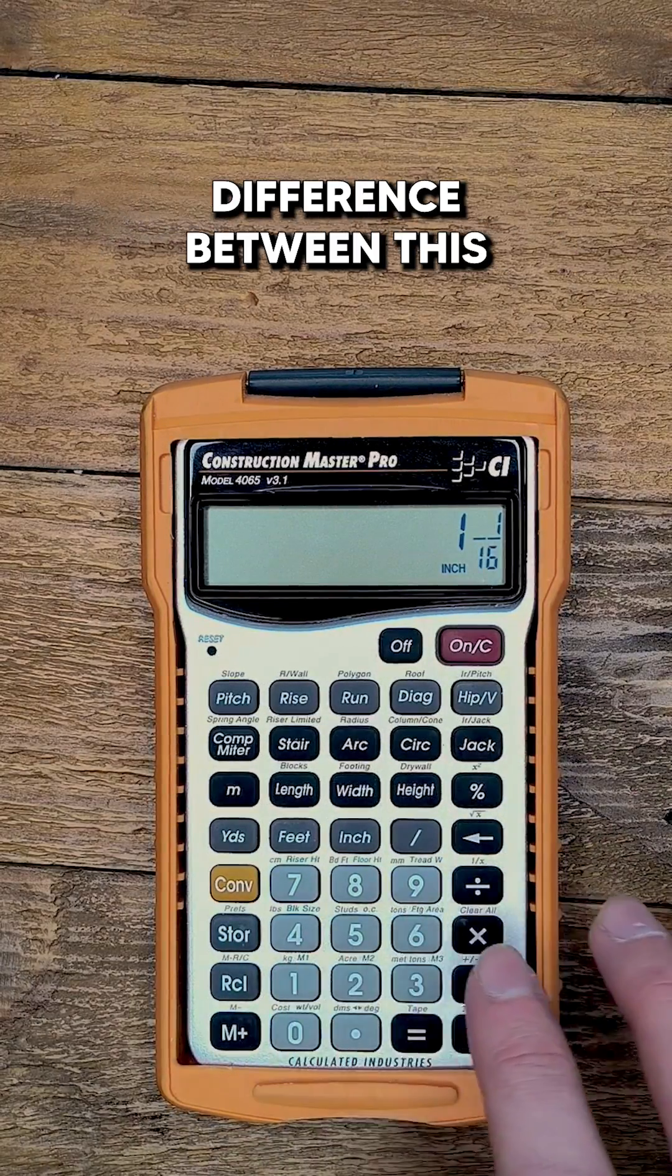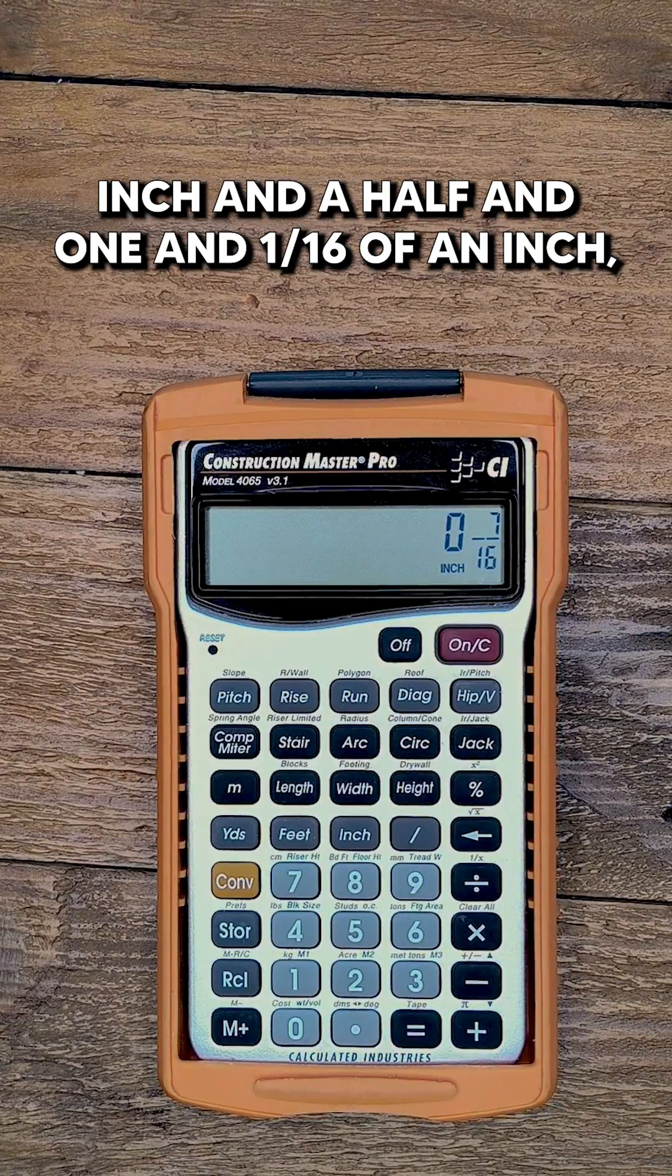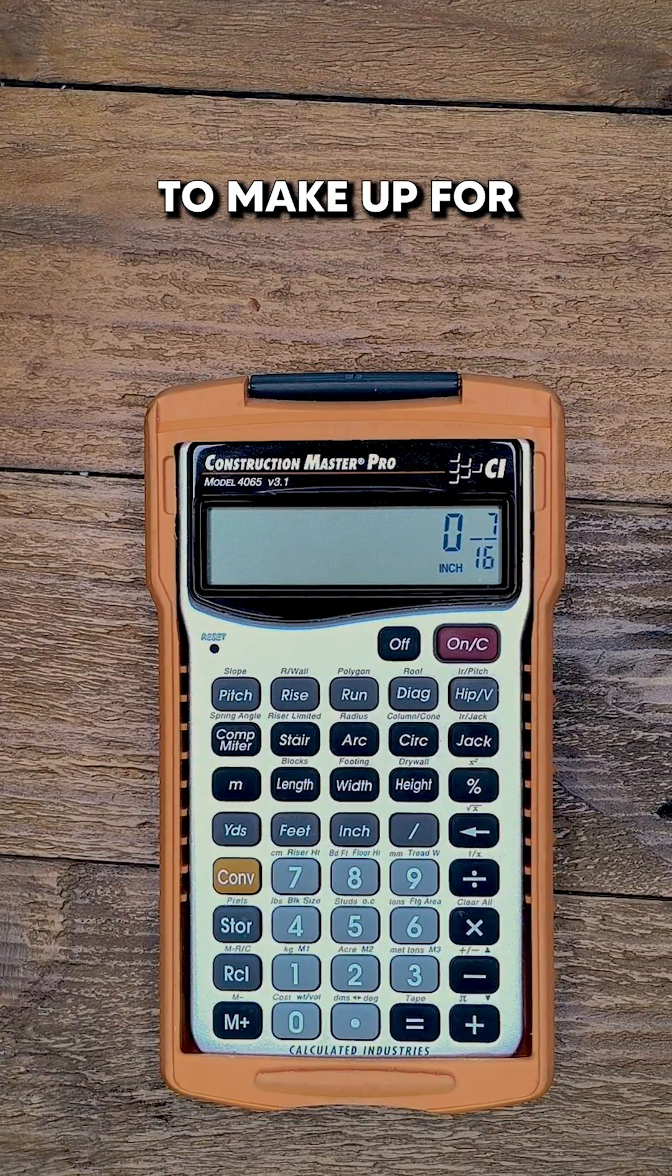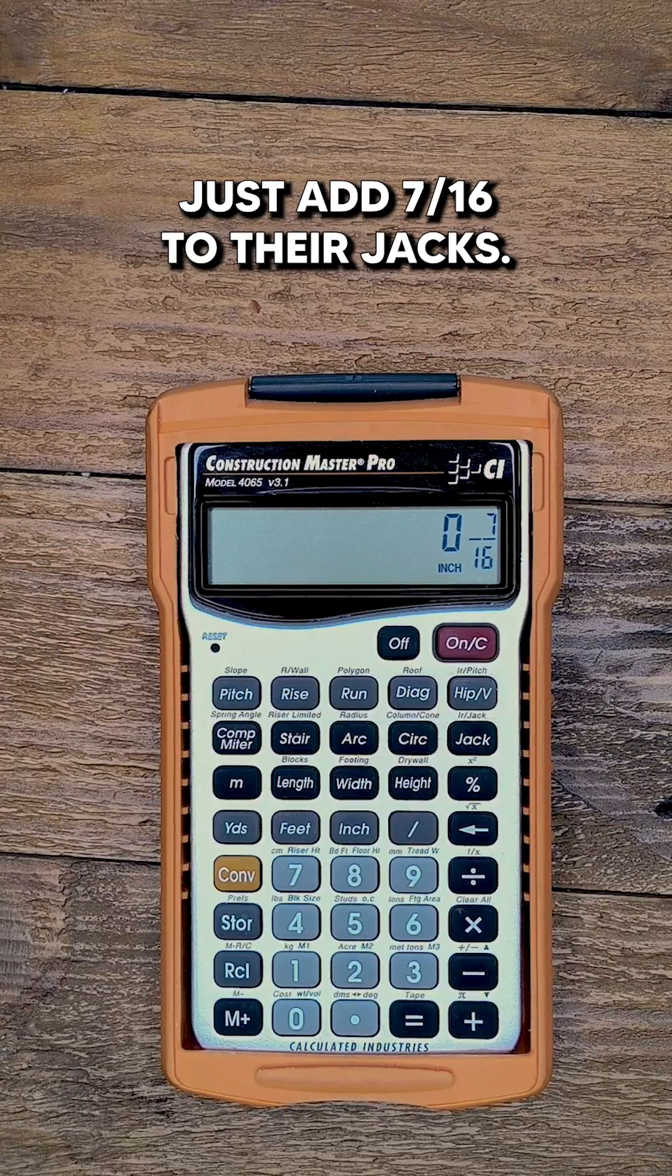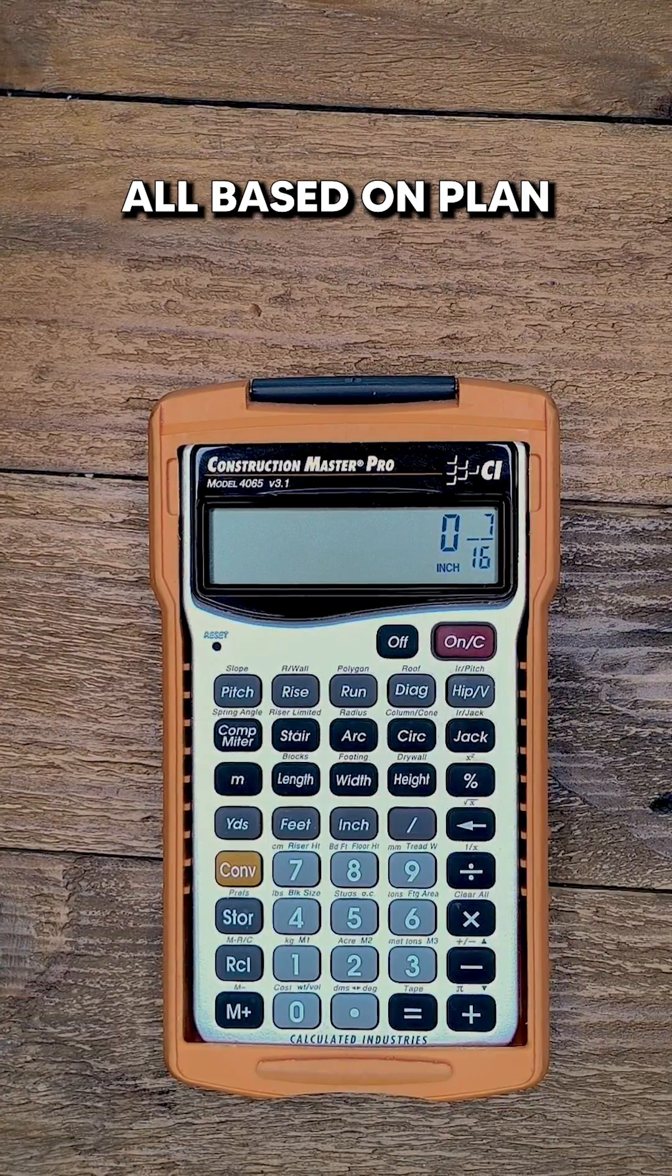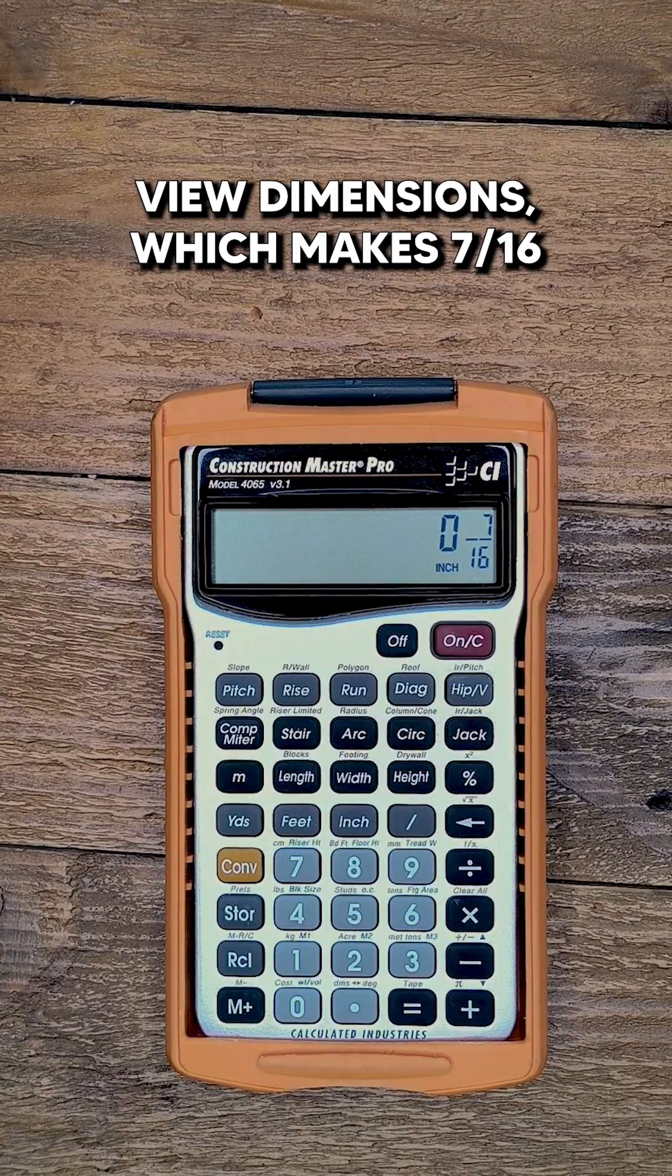And if we find the difference between this inch and a half and 1 and 1 sixteenths of an inch, you're left with 7 sixteenths of an inch to make up for, and why many framers just add 7 sixteenths to their jacks. You may have noticed that this is all based on plan view dimensions, which makes 7 sixteenths